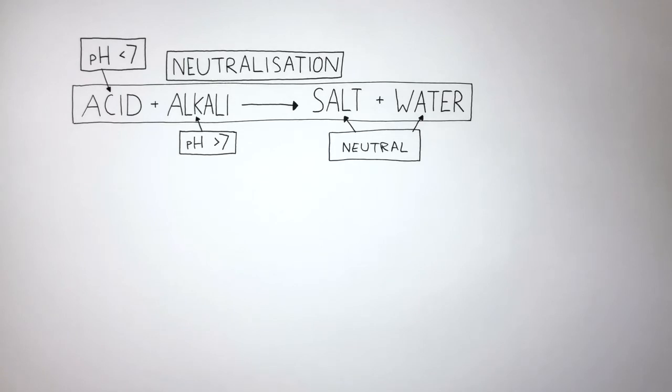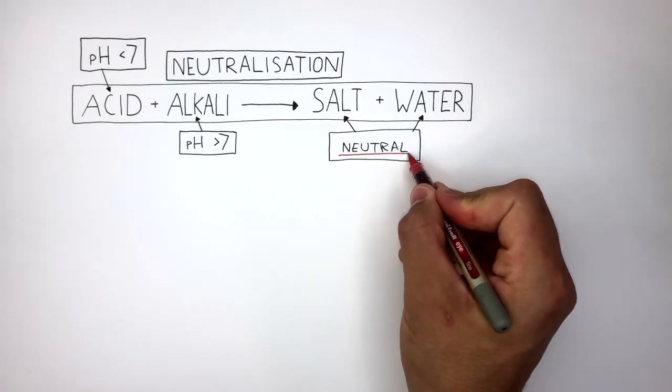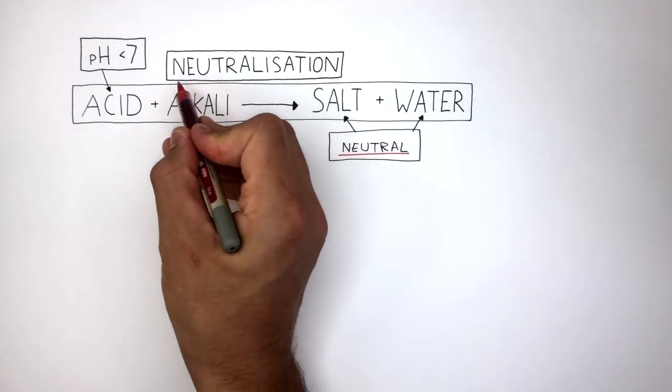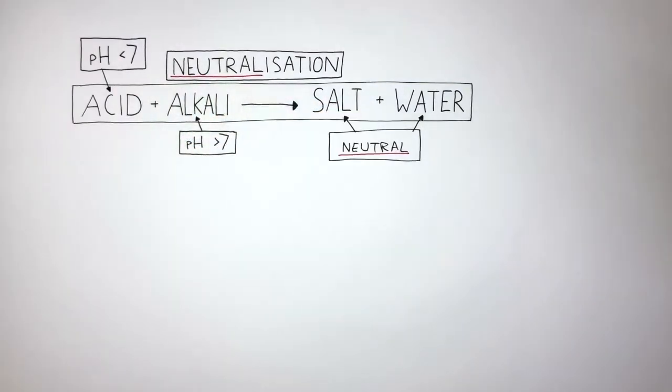Because the acid and alkali have become neutralized to form a neutral solution, the name of the chemical reaction, neutralization, has the word neutral in it. The acid and alkali have neutralized each other to form a neutral solution with a pH of 7.